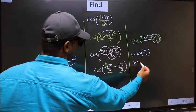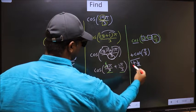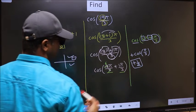So plus cos π by 3 is 1 by 2. This is our answer.